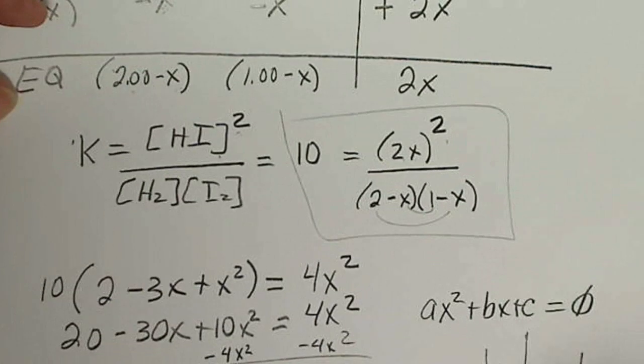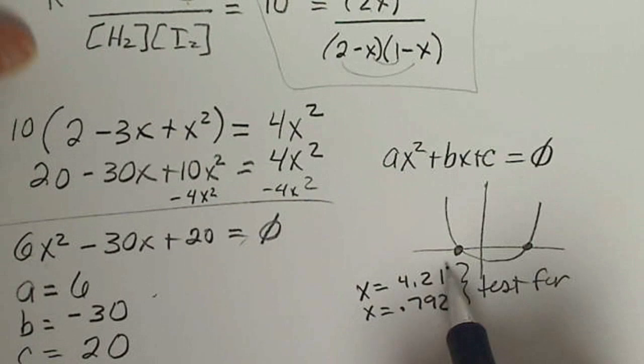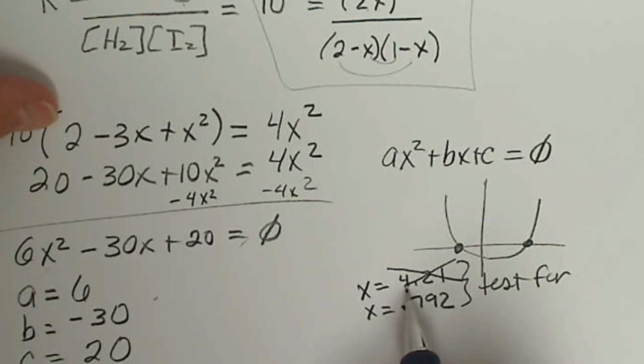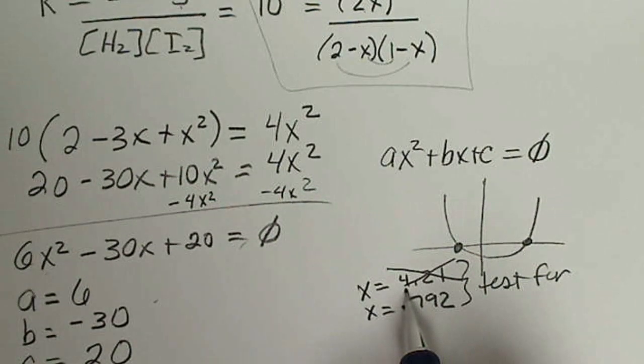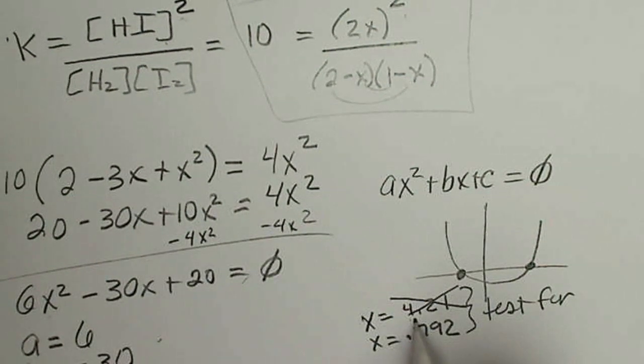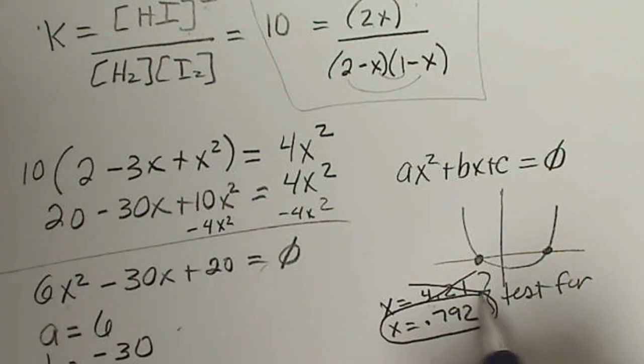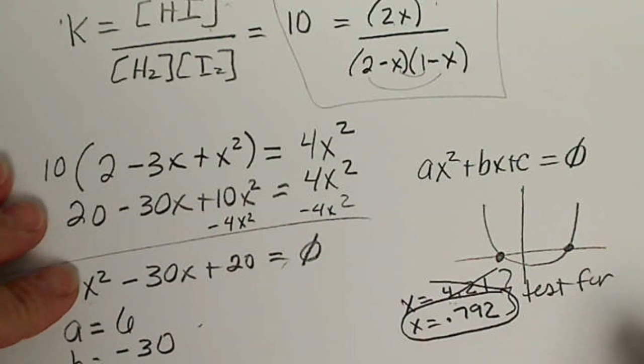2 minus X is the criteria for testing, or 1 minus X. So if I look at those conditions, this value doesn't make sense because I can't lose more reactant than I've got. We only started out with 2 atmospheres, so it's going to be impossible to lose 4 atmospheres.